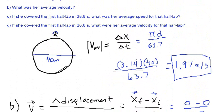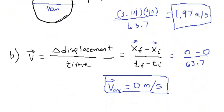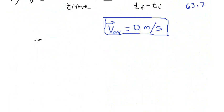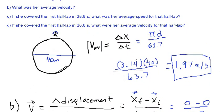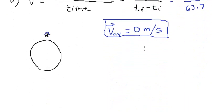If she covered the first half lap in 28.8 seconds, what was her average speed for that half lap? I am going to draw that circle again. This is the circle, and this is the girl at the top. She is going to run around this circle. The question asks: if she covered the first half lap, she is covering only half the lap — from this point all the way to here. What was her average speed for that half lap?